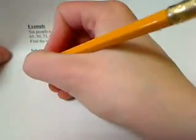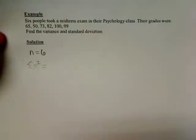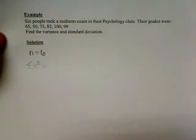When we calculate the summation of x squared, we need that value. That says to take all of the values themselves and square each one of them. So we want to take 65, square it, add it to 50 squared, add it to 73 squared.